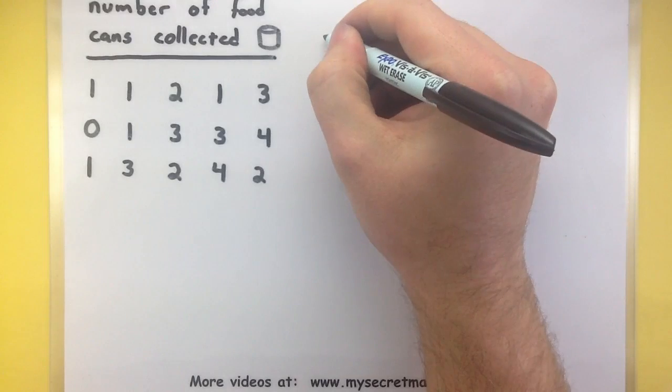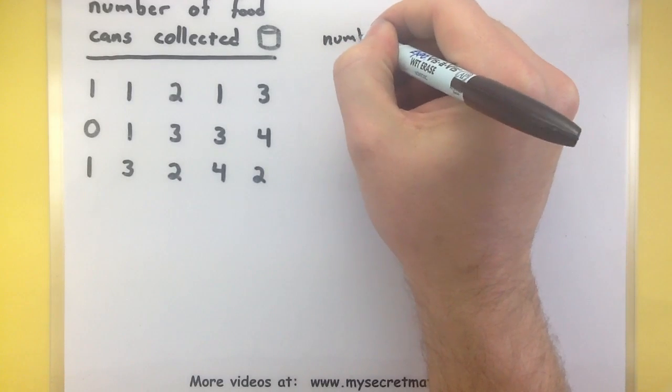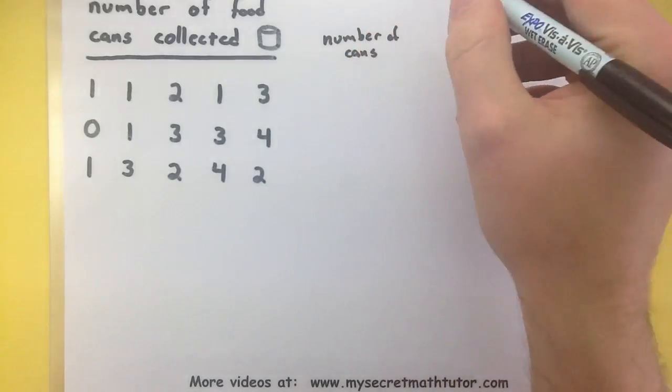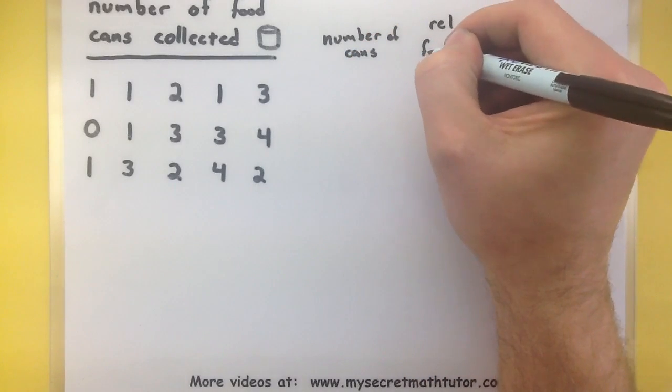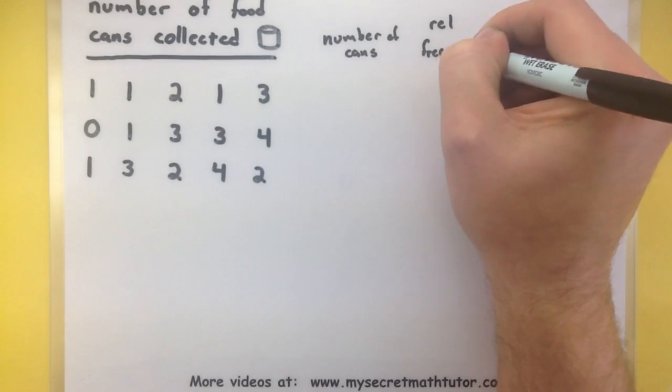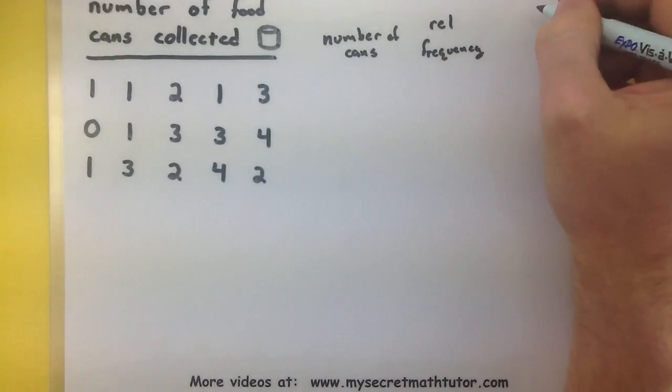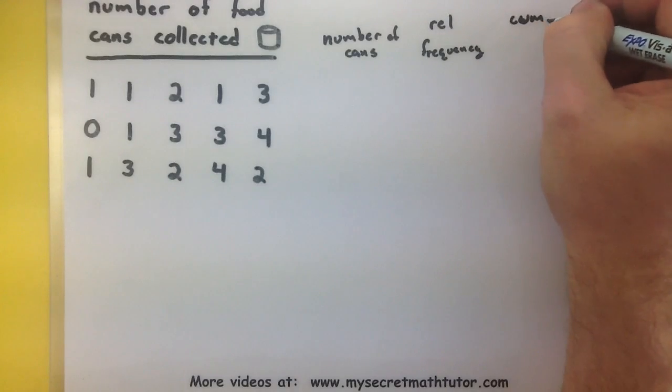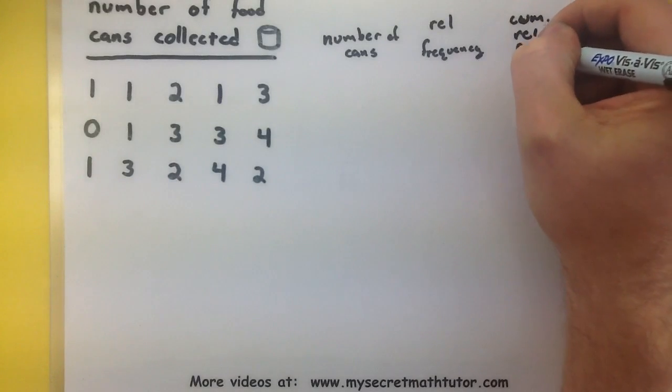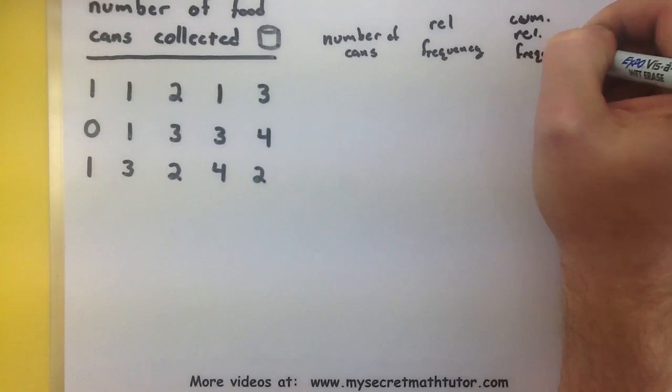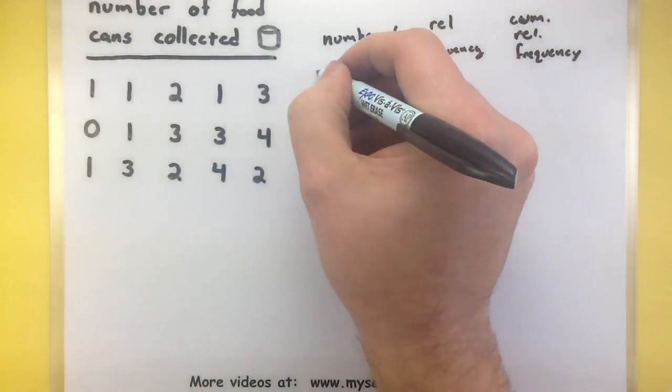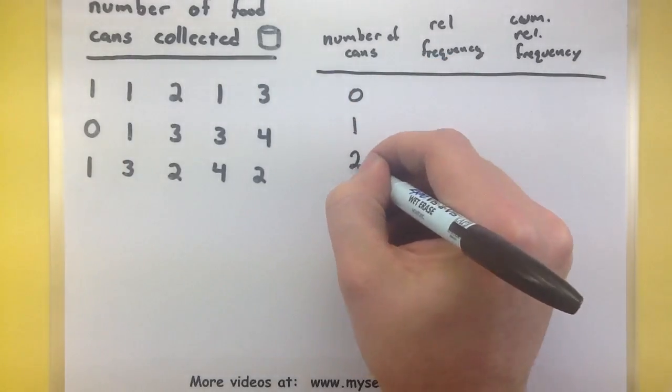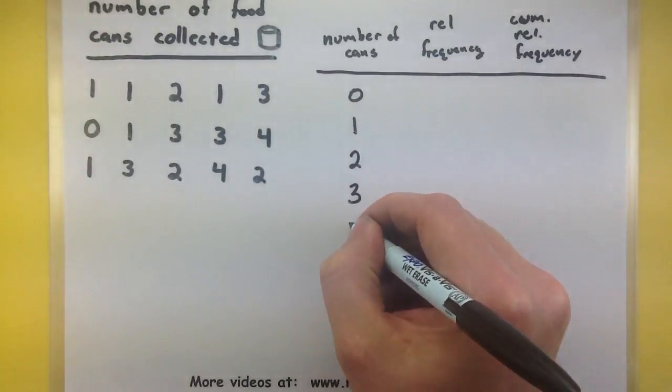So let's do the number of cans. We'll do their relative frequency. And here's where we will put the cumulative relative frequency. So zero cans, one can, two cans, three cans, and four cans.